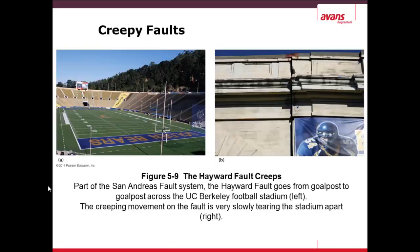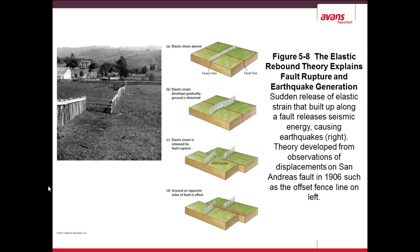Another phenomenon is the theory of elastic rebound. In the photo on the left, you see a fence that used to be very straight. In diagram A, you see a normal fence line crossing a transform fault. The tension between the fault blocks built up, as shown in phase B. Eventually in phase C, the strain grows so high that the fault ruptures in one large event, and the ground on the left becomes offset from the ground on the right as the transform fault blocks move against each other.